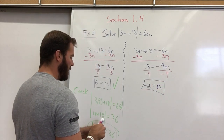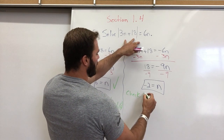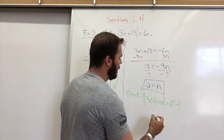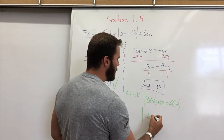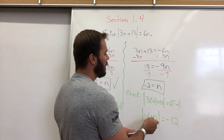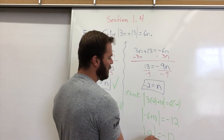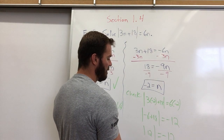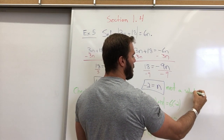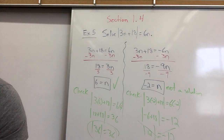Now let's check n equals negative 2 in our original equation. We get absolute value of 3 times negative 2 plus 18 equals 6 times negative 2, which is absolute value of 12 equals negative 12. The absolute value of 12 is 12, not negative 12, so this is not a solution — it's an extraneous solution.